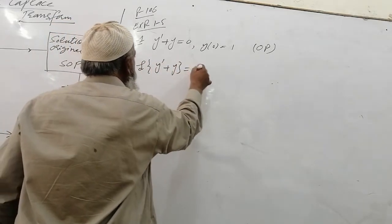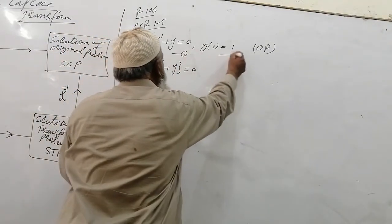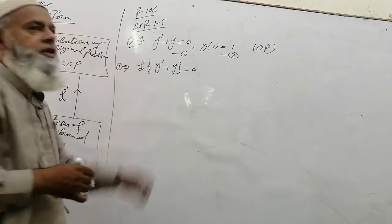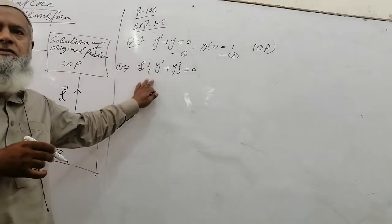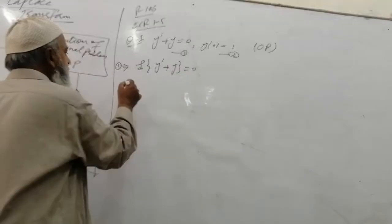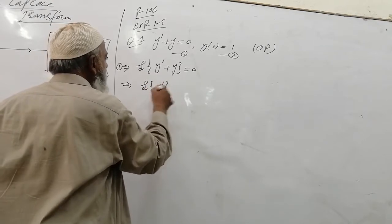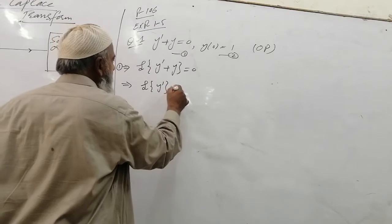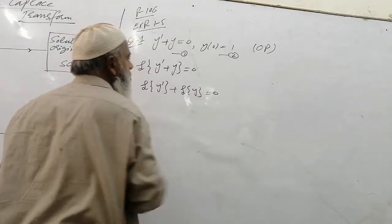Y-prime plus Y is equal to zero — this is equation 1, the original problem. The Laplace transformation is a linear transformation, so we apply L{Y'} plus L{Y} which is equal to zero.